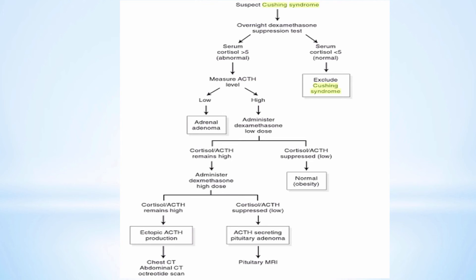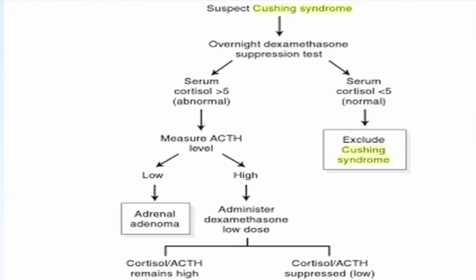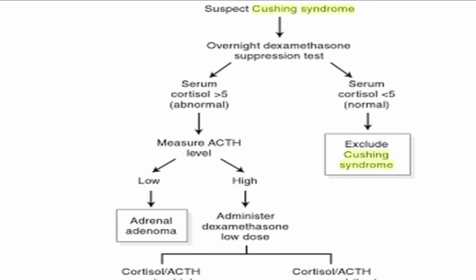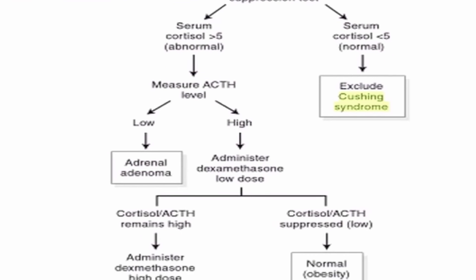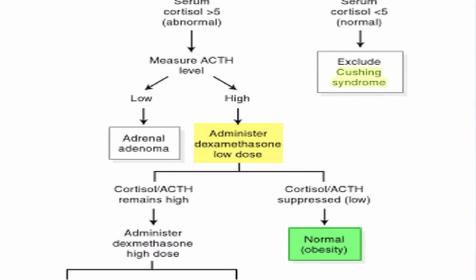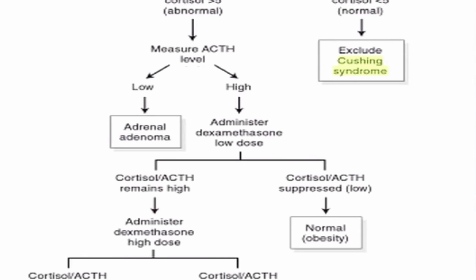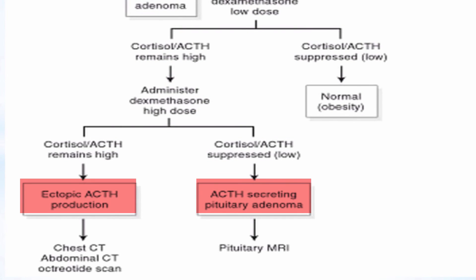To confirm suspicions, we start with an overnight dexamethasone suppression test. Dexamethasone, being a steroid, should suppress the pituitary from secreting ACTH and thus lower cortisol levels measured in the morning. If levels remain high, we're dealing with some form of Cushing's. Low ACTH levels mean the pituitary is responding to dexamethasone and the problem is in the adrenal gland. If ACTH remains high, a low dose of dexamethasone can rule out obesity as a factor; if it still remains high, suspicion falls on a pituitary adenoma or an ectopic production site.